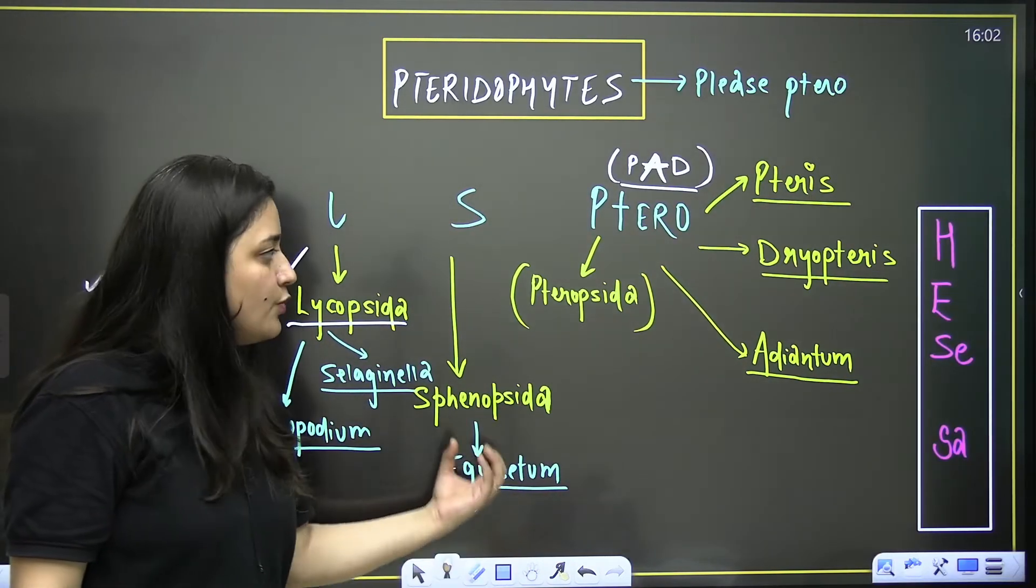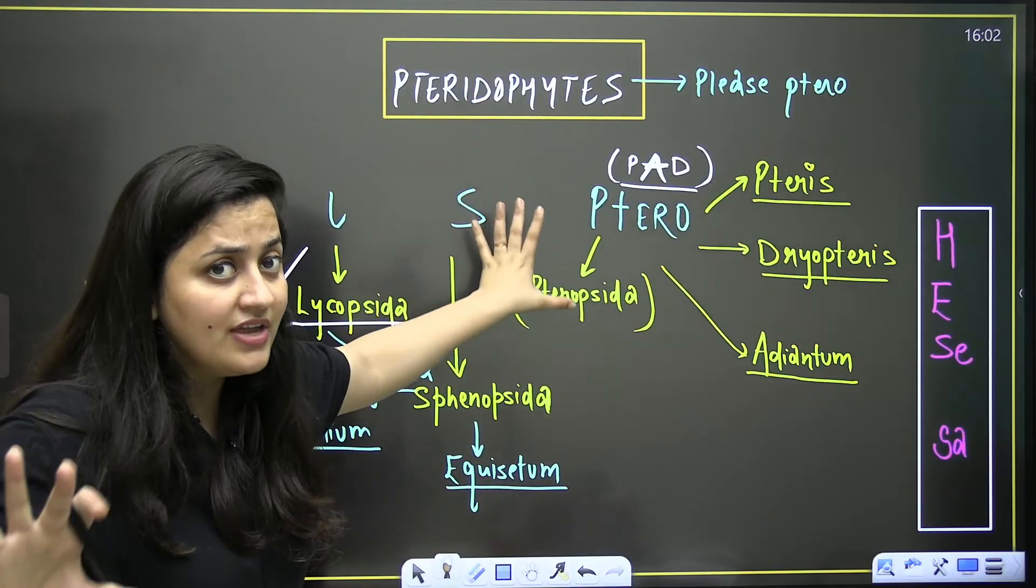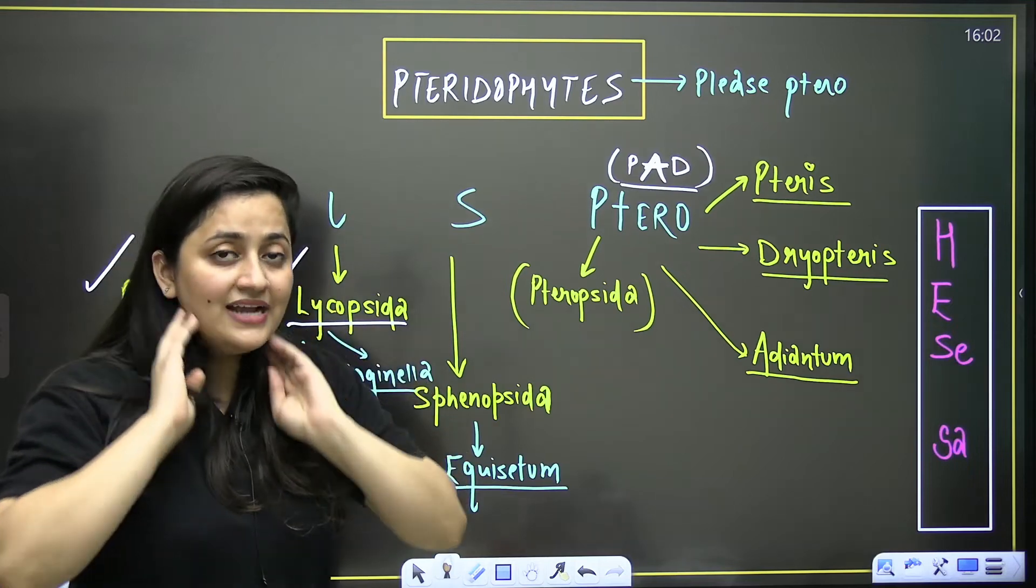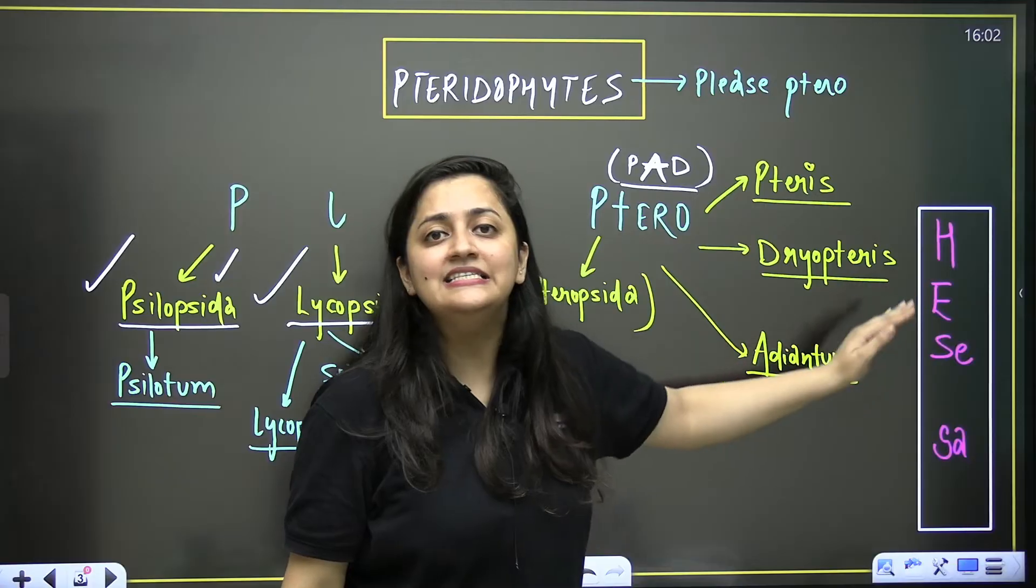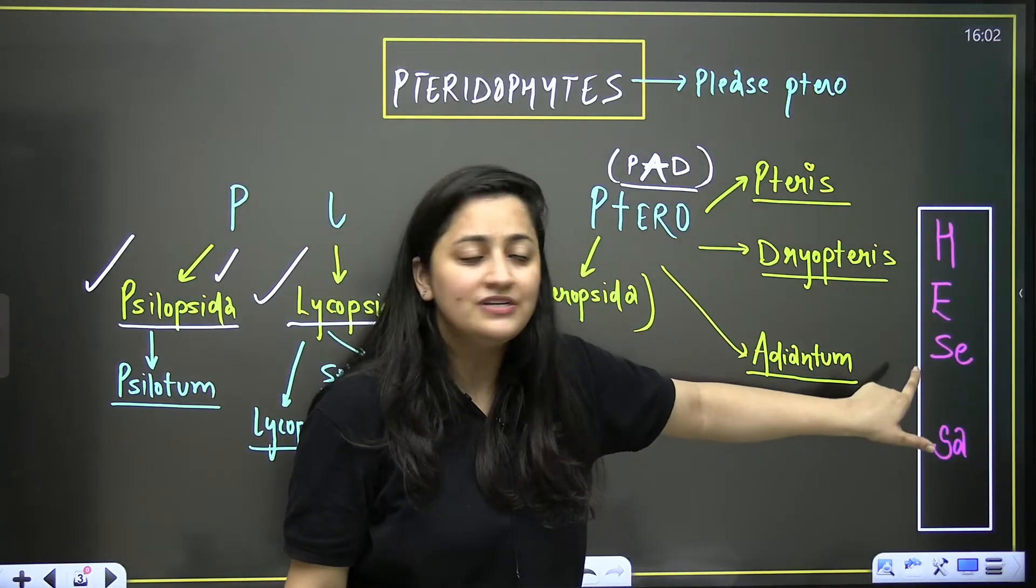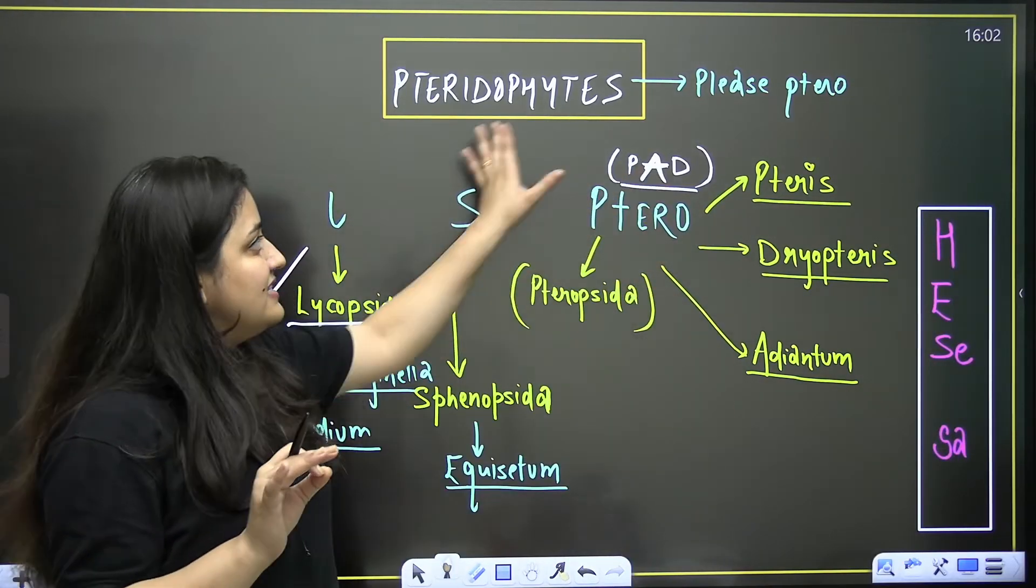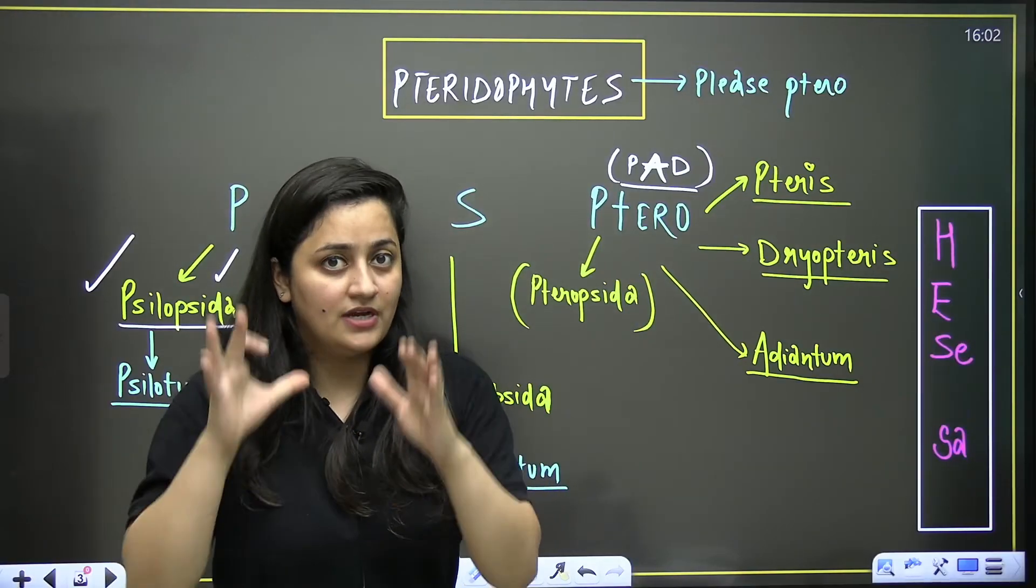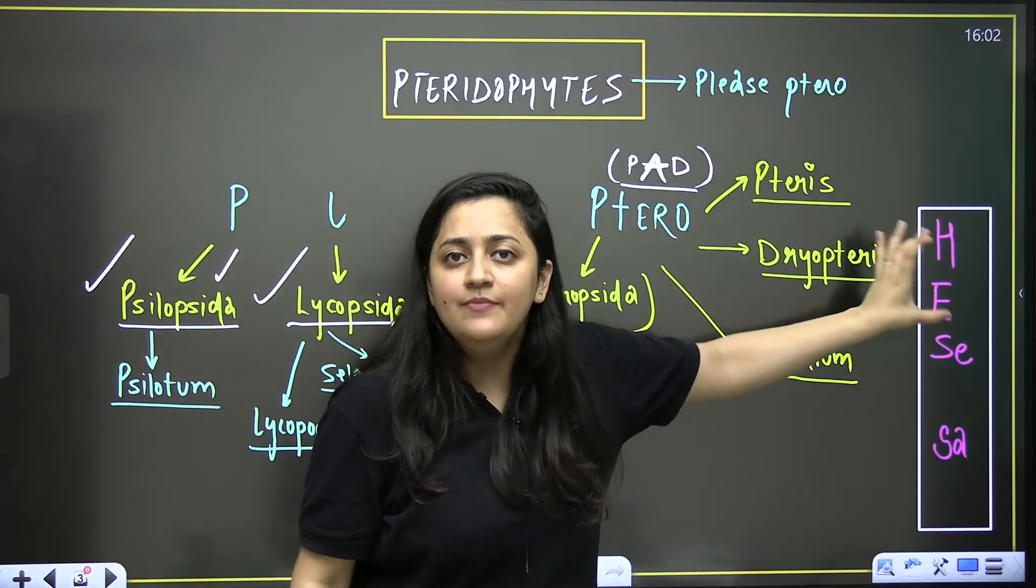Pteridophytes are also having haplodiplontic life cycle, but the main plant body is sporophytic. The gametophyte is independent here. Another trick: 'He seesaw'. He stands for heterosporous, Se for Selaginella, and Sa for Salvinia. These are examples of pteridophytes where two different types of spores are there.